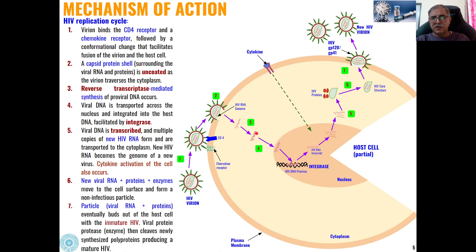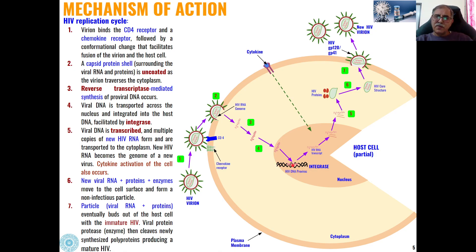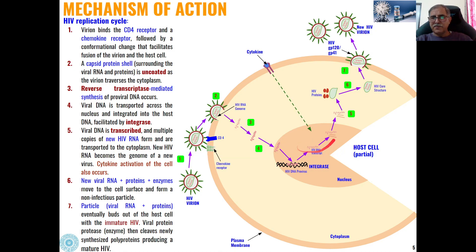In the fourth step, this viral DNA will be transported across into the nucleus of the host cell and it will integrate into the host DNA. So integration will take place — the DNA of the virus will integrate with the DNA of the host cell. Then, HIV RNA will be transcribed, and multiple copies of new HIV RNA will be formed.